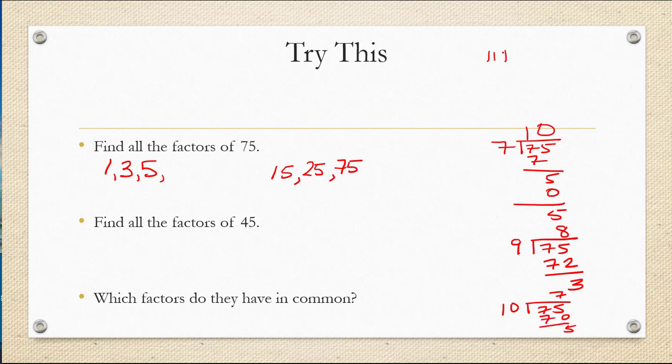How about 9? 9 goes into 75 8 times. 8 times 9 is 72 with a remainder of 3. So 9 doesn't go in evenly either. 10 doesn't go in evenly because 10 goes into 75 7 times with a remainder of 5. Let's check 11. 11 goes into 75, let's see, it looks like it would go in about 6 times. 6 times 11 would be 66 and subtracting we would get a remainder of 9. So 11 doesn't work. We could try 13. 13 goes into 75, we could try maybe 5 times. 5 times 13 though is going to give us 65 which has a remainder of 10. So in fact the only factors are 1, 3, 5, 15, 25 and 75.